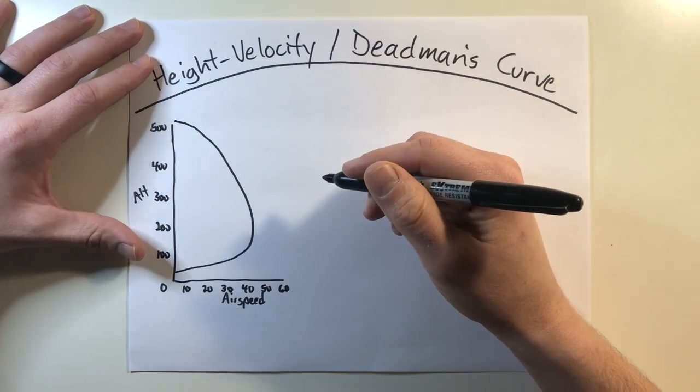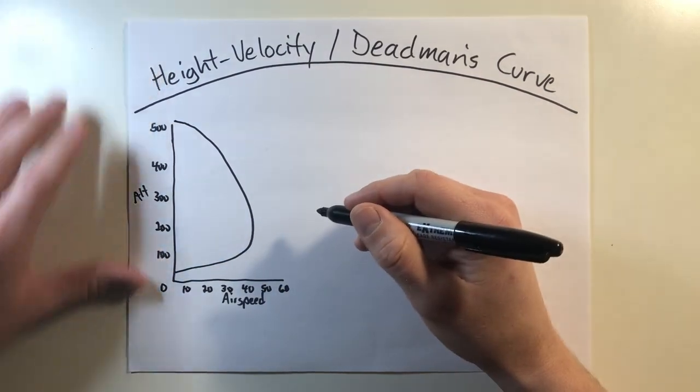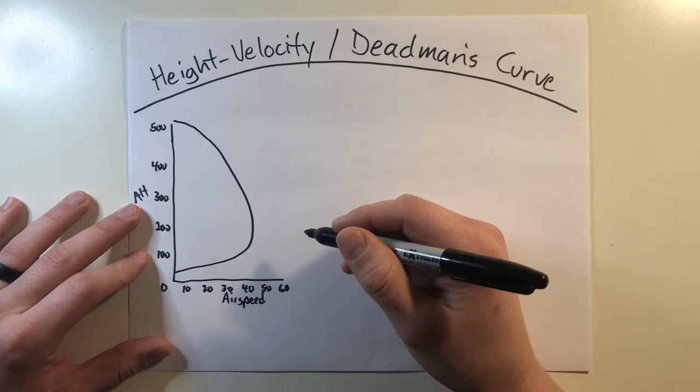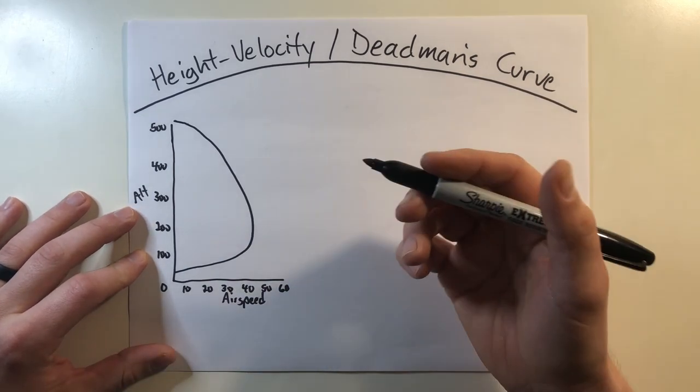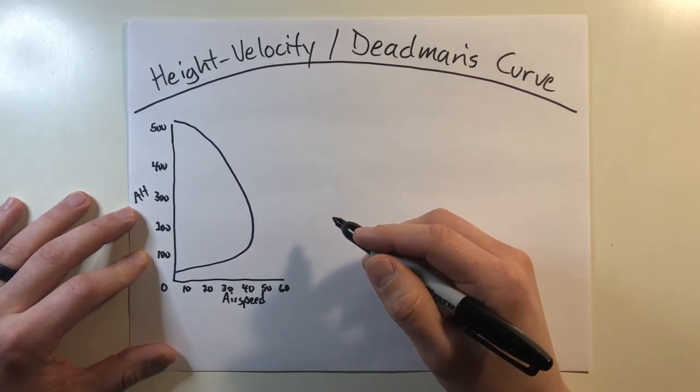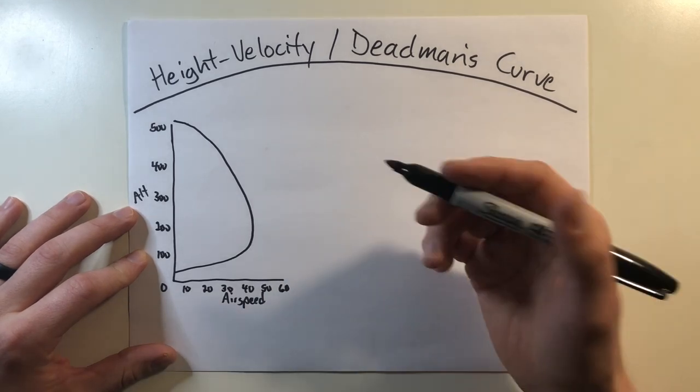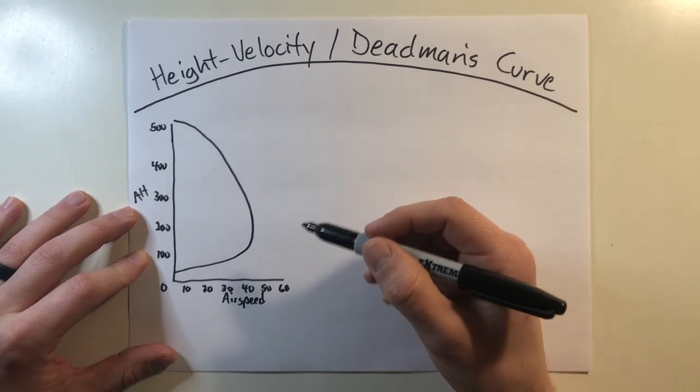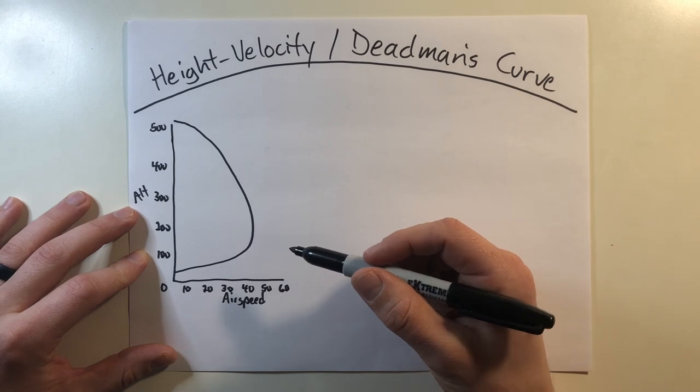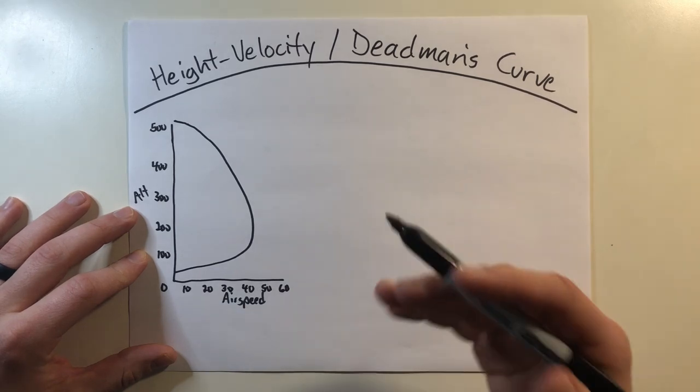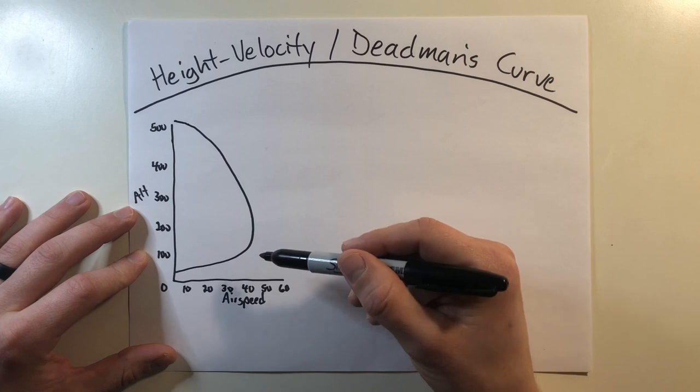So what does this mean? Well the chart has a few names associated with it. It's the height velocity curve, the avoid area, the dead man's curve, but generally it outlines the area of certain altitudes and velocity combinations that you want to stay away from because if an engine does fail, the likelihood of a safe landing is unlikely. This means if you have to auto-rotate it's very unlikely that you can safely do it.